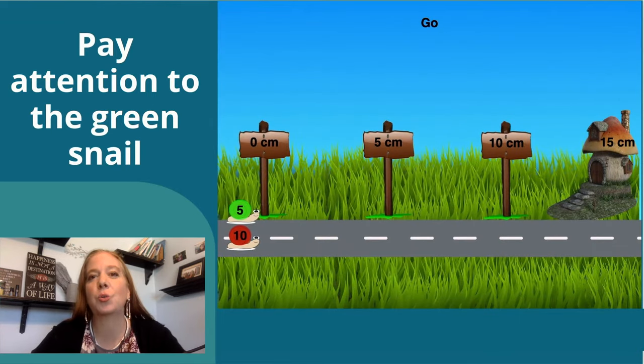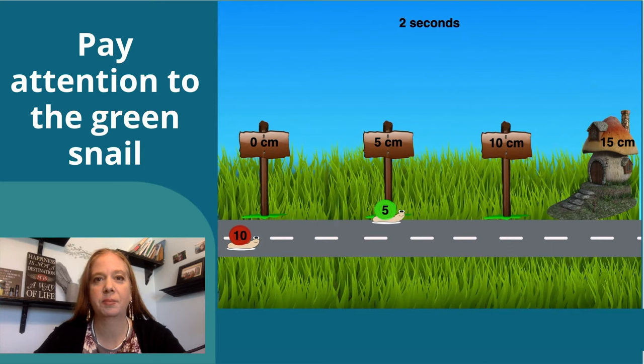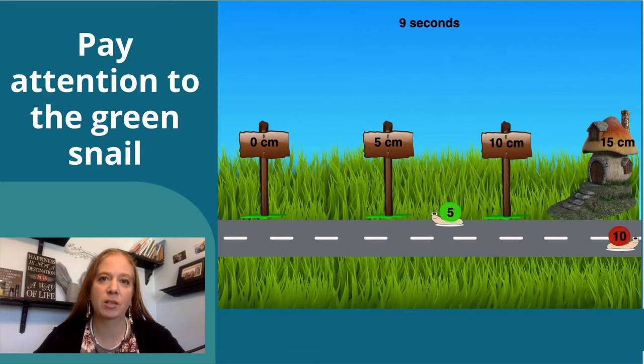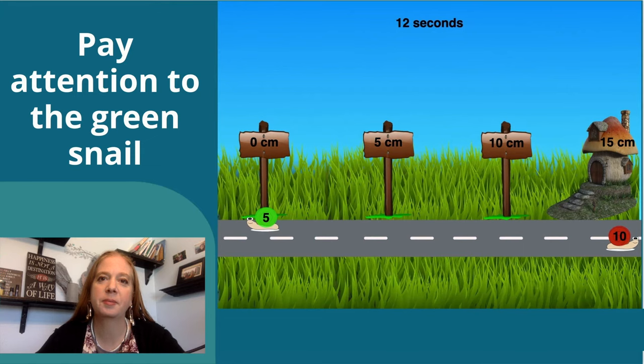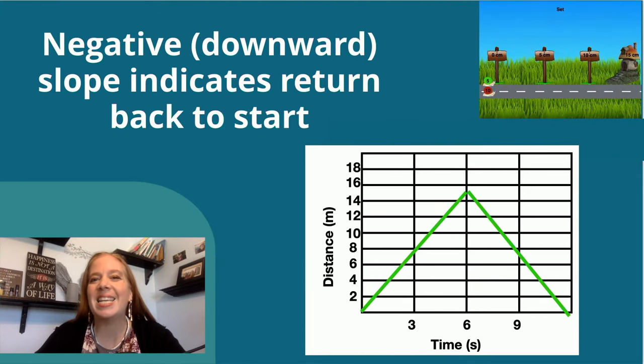Pay attention to the green snail. Notice how it's moving back to start. So what would that look like on a graph? A negative downward slope indicates a return back to start.